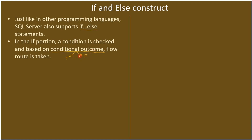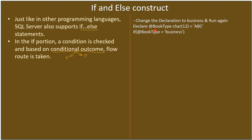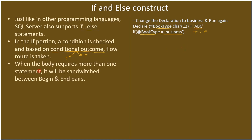Here we declared a variable called book_type and it is holding a value of 'ABC' initially. This is the conditional expression: book_type equal to 'business'. The conditional outcome will be true if book_type is holding the value 'business', otherwise it will return false. In this case we will be getting false because book_type is holding the value 'ABC'.